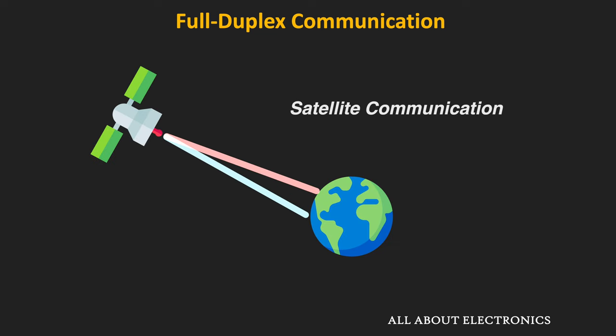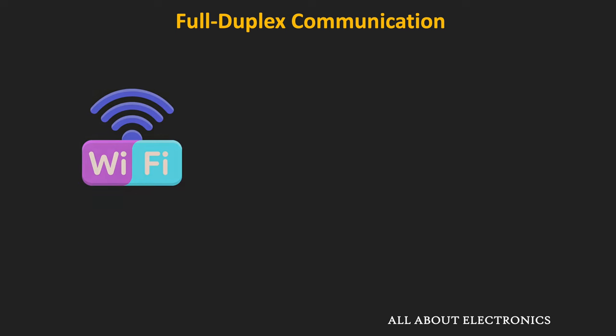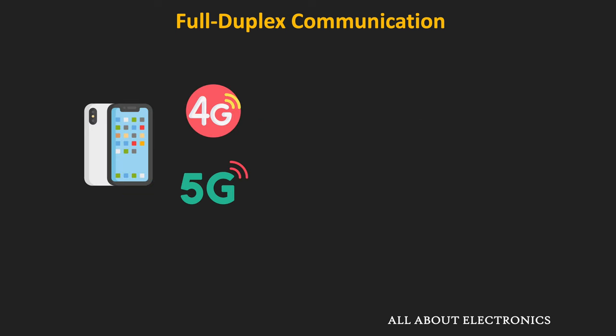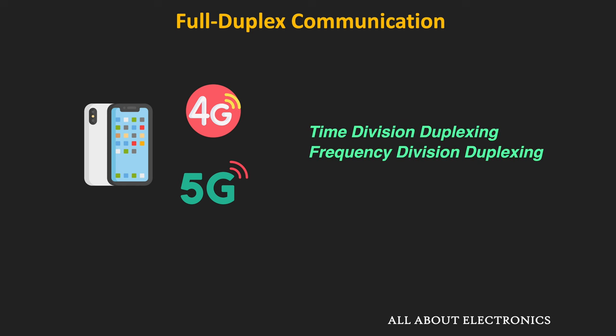Satellite communication is an example of frequency division duplexing, where uplink and downlink use two separate frequencies. On the other hand, Wi-Fi is an example of time division duplexing. Cellular network technologies like 4G and 5G use both time division as well as frequency division duplexing.